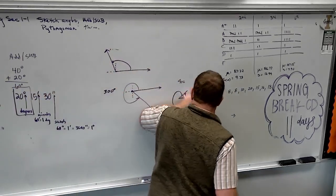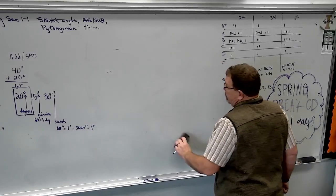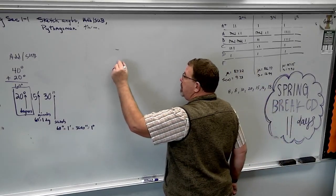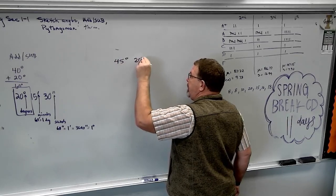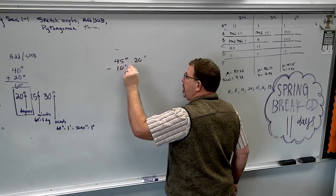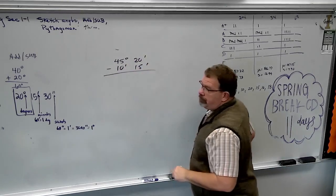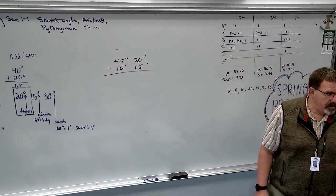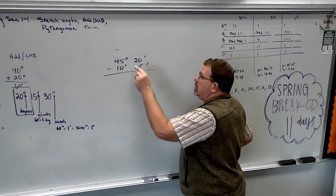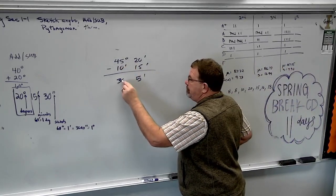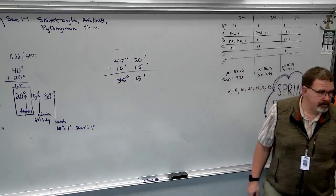Here's a subtraction one. We'll do an easy one then a tougher one. Easy: 45 degrees, 20 minutes, minus 10 degrees, 15 minutes. Just subtract like you normally would. 20 minus 15, 45 minus 10. Done — 35 degrees, 5 minutes.